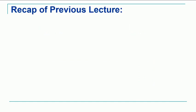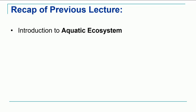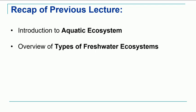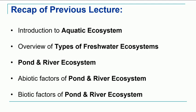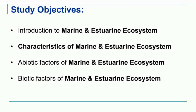Let's take a brief recap of the previous lecture. In the previous lecture we studied the introduction to Aquatic Ecosystem, overview of types of Freshwater Ecosystems, Pond and River Ecosystem, and the abiotic factors as well as biotic factors of these two ecosystems. In today's lecture, the study objectives will be the introduction to Marine and Estuarine Ecosystem, their characteristics, and their abiotic and biotic factors.